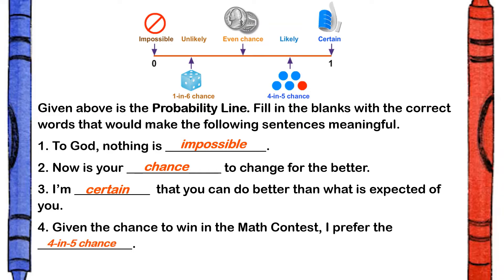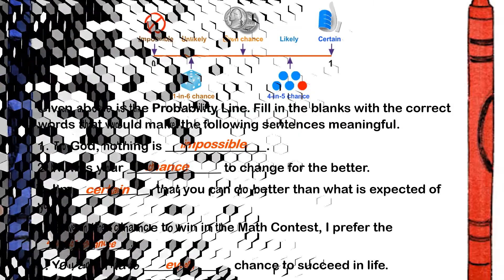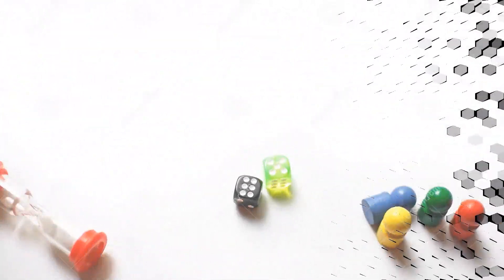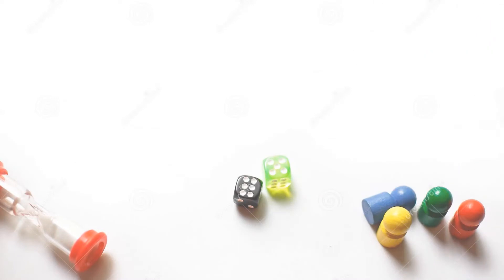Number four, given the chance to win in the math contest, I prefer the four in five chance. Number five, you and I have blank chance to succeed in life. It is even. So, it's all in your hands.